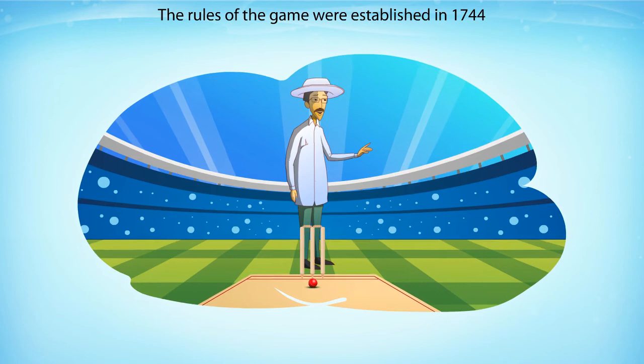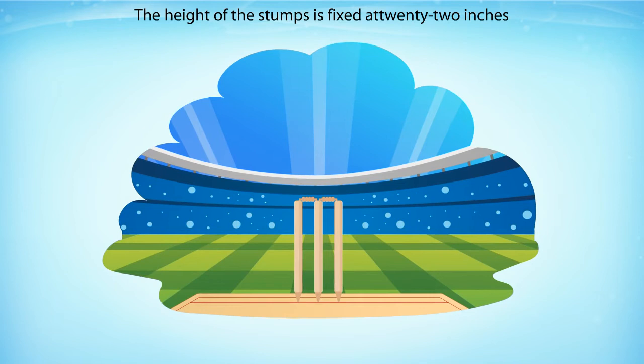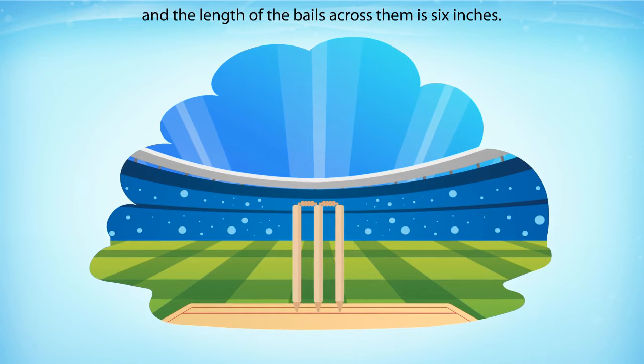The rules of the game were established in 1744 and gave the umpires the power to resolve all disputes. The height of the stumps is fixed at 22 inches and the length of the bails across them is 6 inches.